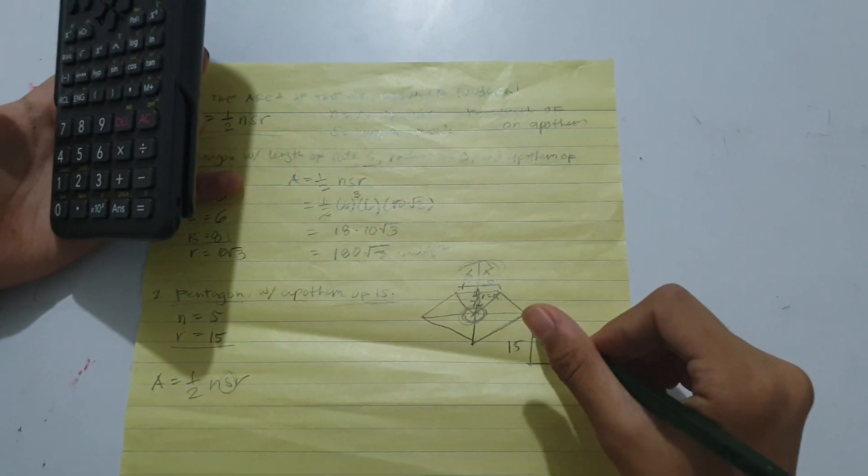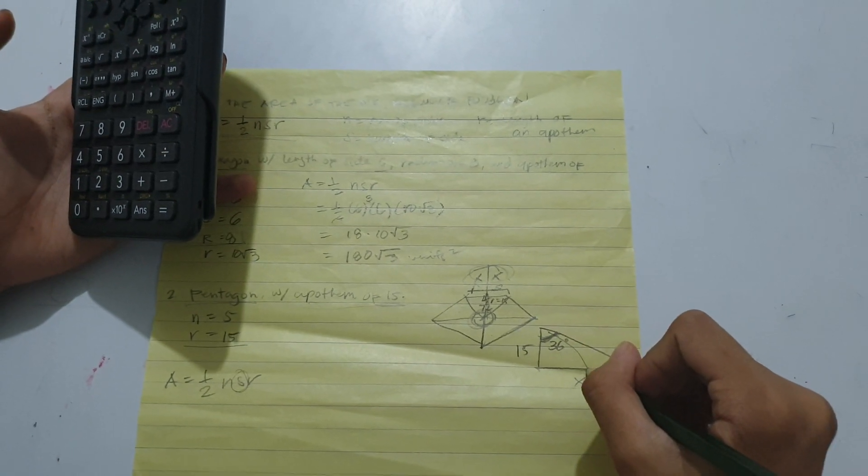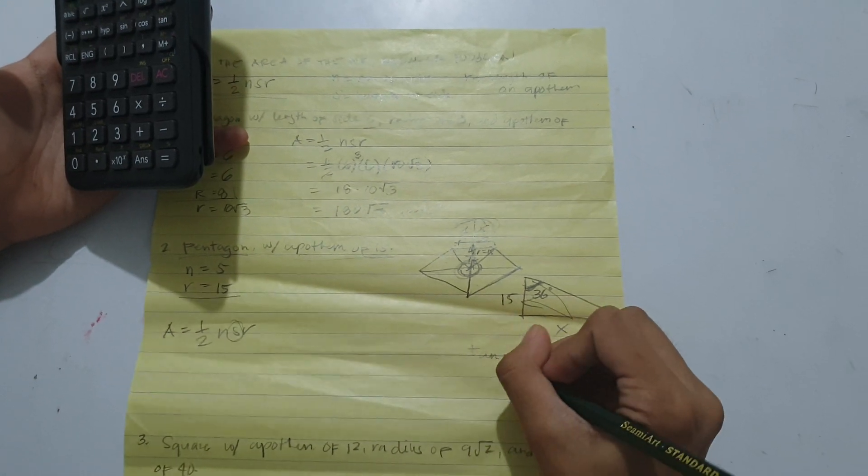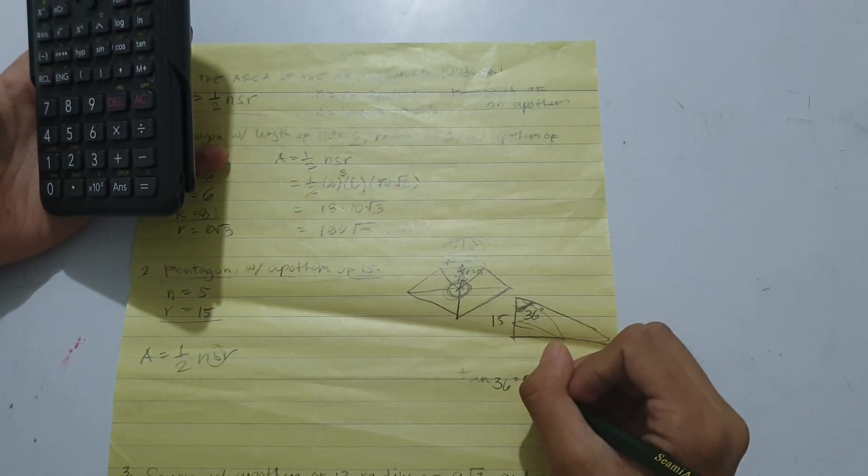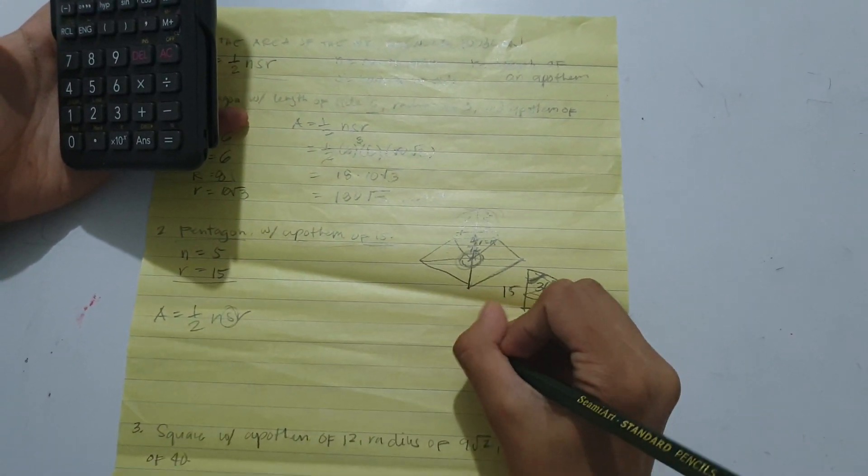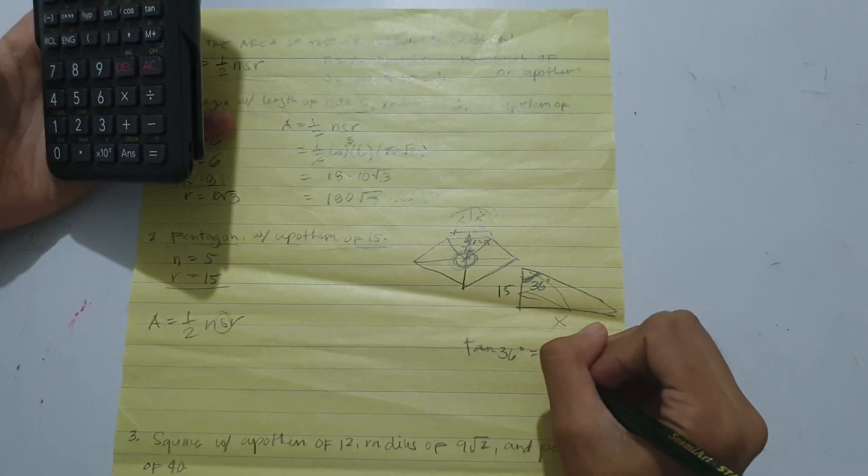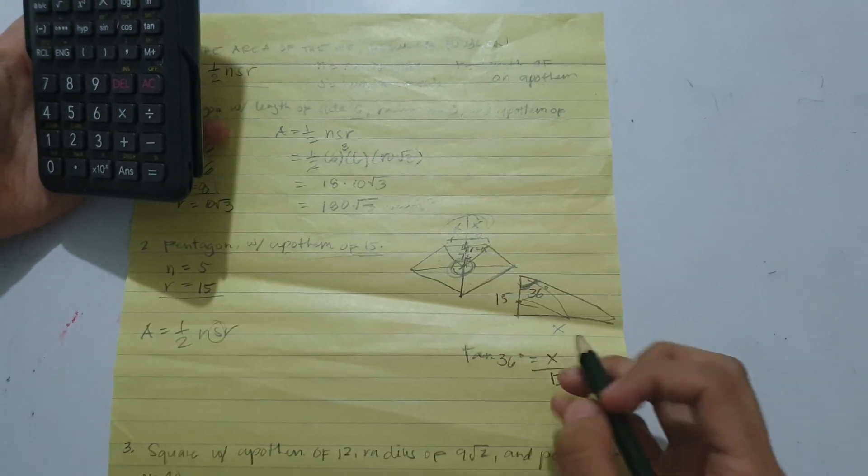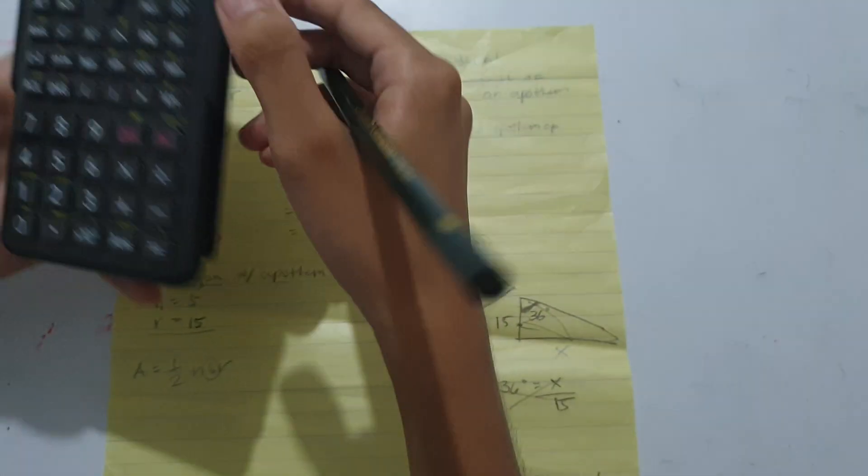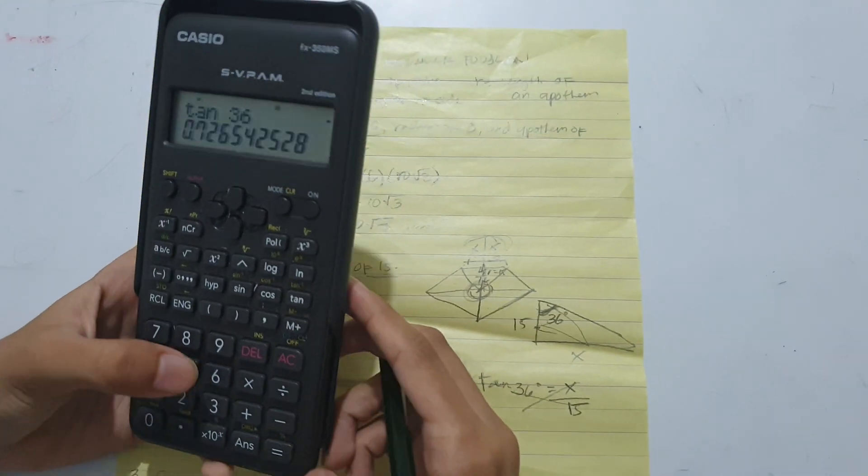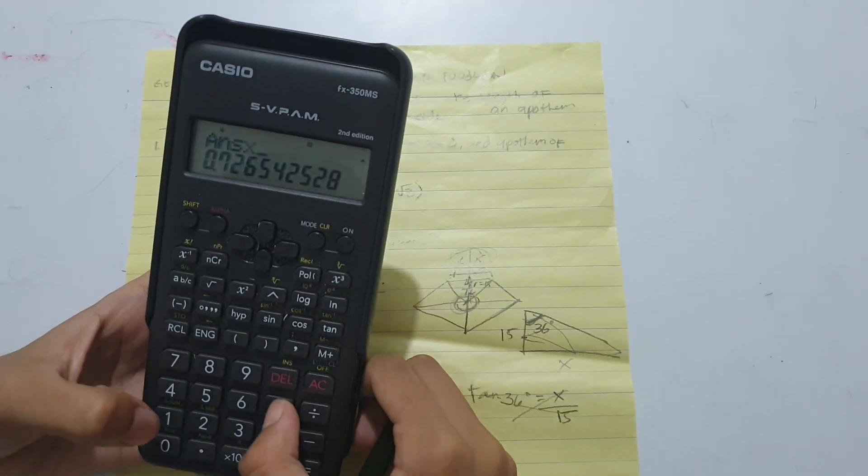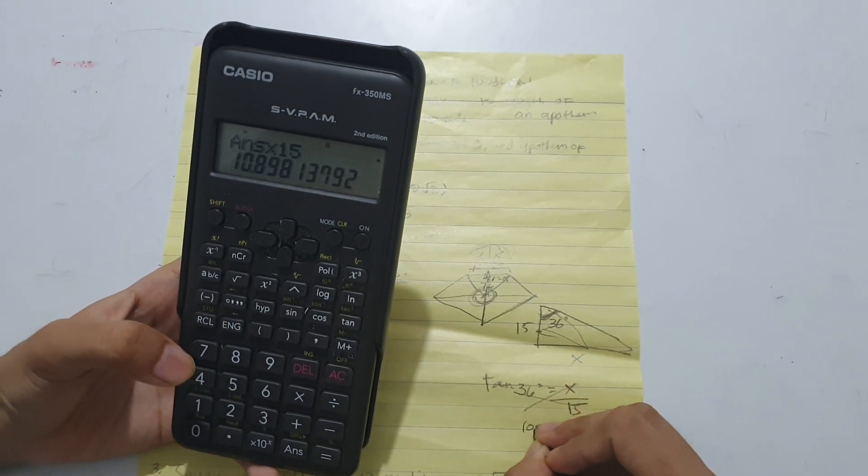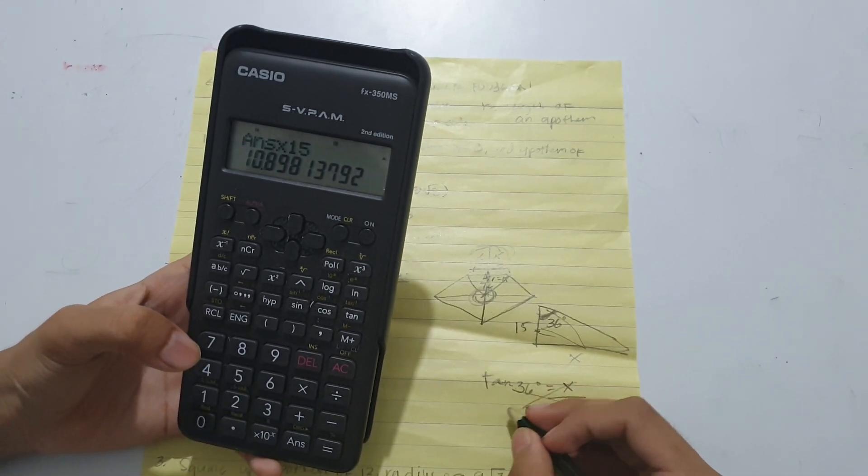Applying SOHCAHTOA, that would be opposite over adjacent. So tan 36 degrees equals X over 15. Cross multiply: tan 36 times 15 equals 10.9.